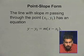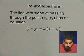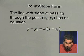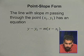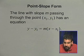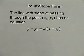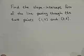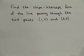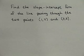The line with slope m passing through the point x1, y1 has the following equation: y minus y1 equals the slope m times x minus x1. Let's take a look at an example. Here we're asked to find the slope-intercept form of a line passing through the two points 1, 7 and 3, 3.